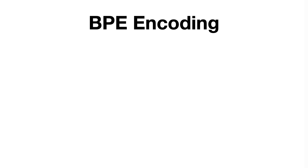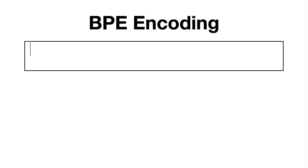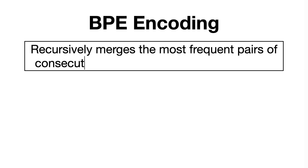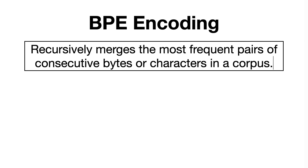Let's start with the byte-pair encoding tokenizer, commonly abbreviated as BPE, which is a sub-word tokenization algorithm that recursively merges the most frequent pairs of consecutive bytes or characters in a corpus. For instance, imagine that we have the following sentence: 'deep learning engineer.'